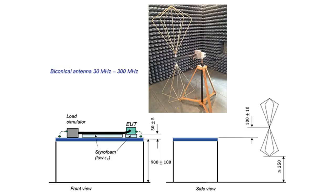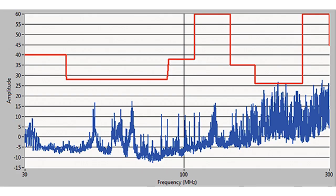The measurement setup inside the ALSE for the radiated emissions measurements using a biconical antenna is shown in figures. The biconical antenna measurement results are shown in figure.